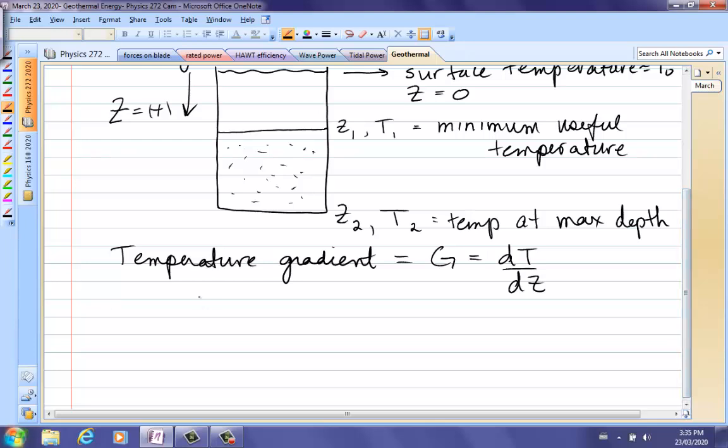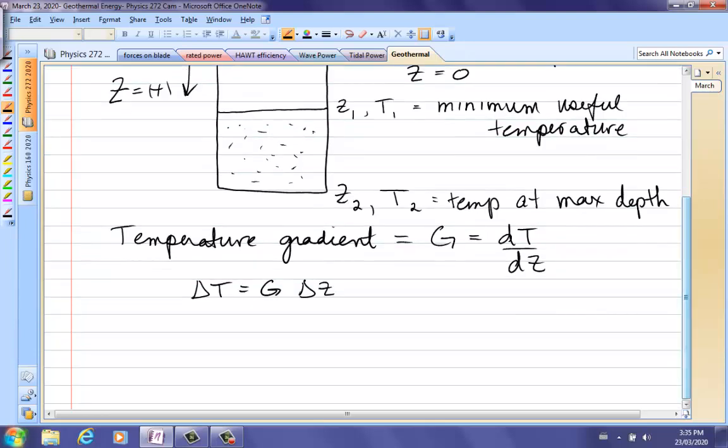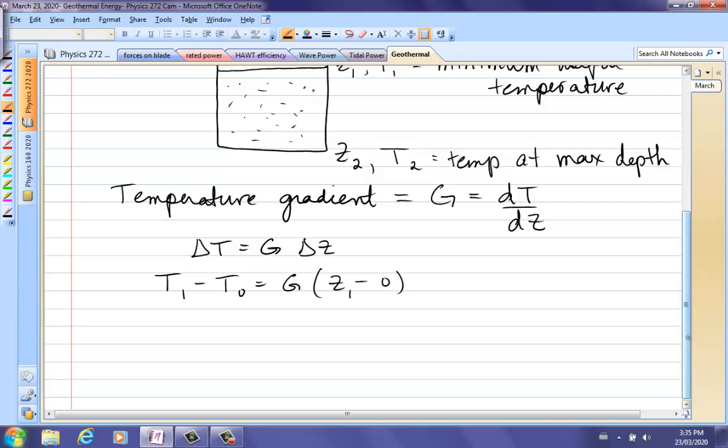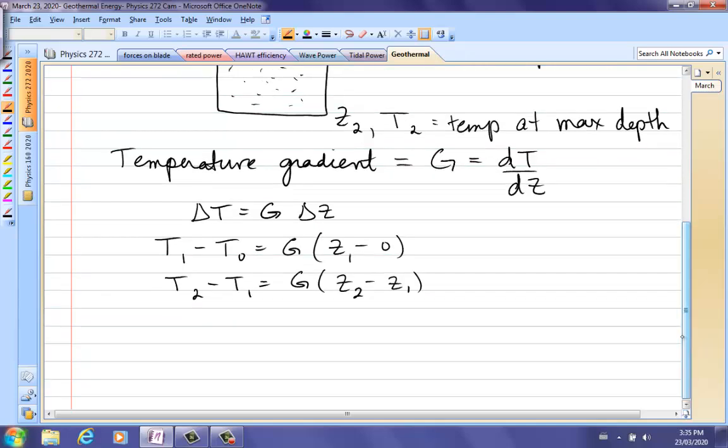If it's constant, it's just a straight line. We can write that the change in temperature is equal to G times the change in depth. That's just a straight line equation where G is the slope. It means we can take any two temperatures, like minimum useful temperature minus surface temperature, which would be G times depth z1 minus zero because the surface is obviously z equals zero. Or we can take t2 minus t1, and that would be the gradient times z2 minus z1. So those relationships are often quite handy when we're doing this derivation.